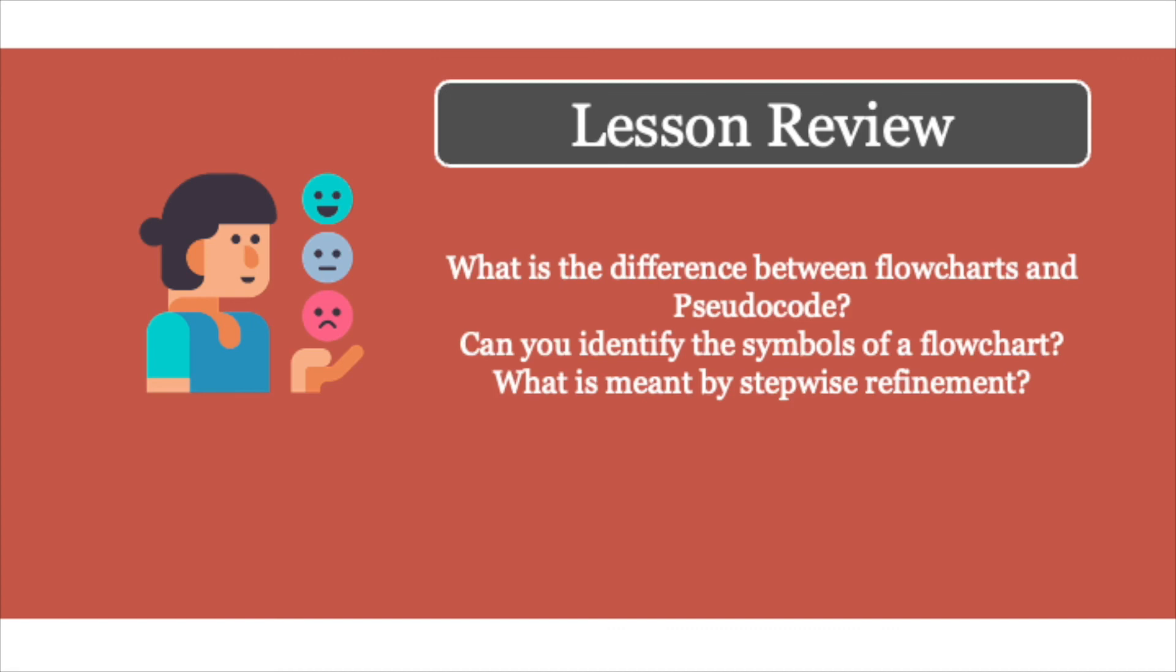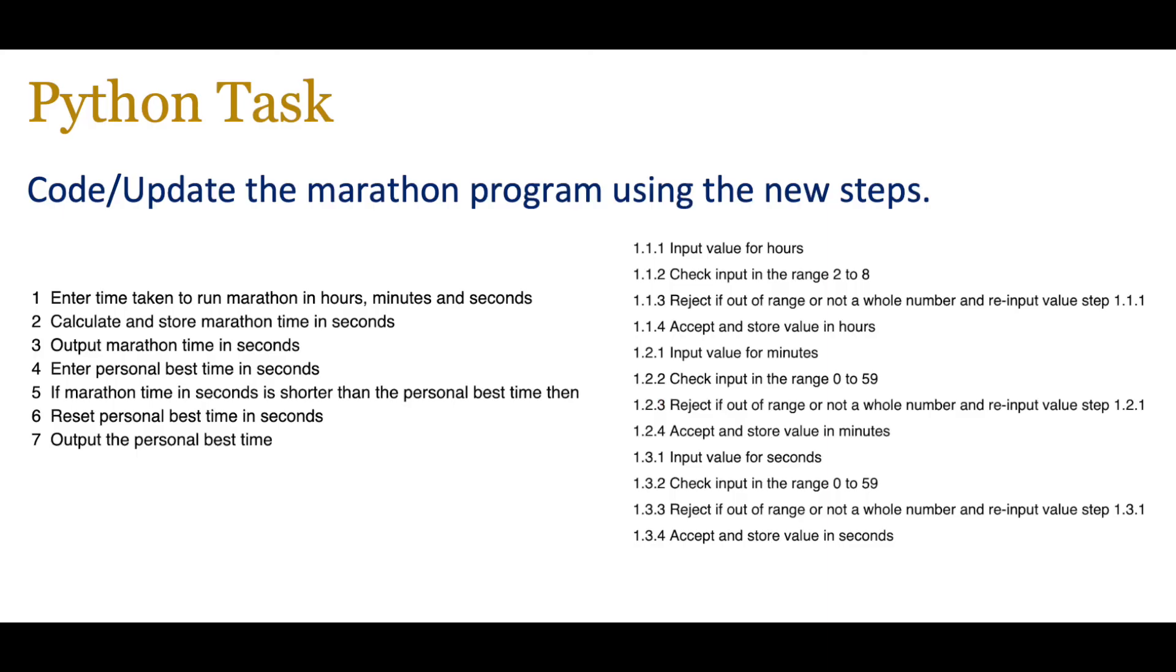So get into the nitty-gritty of pseudocode and coding. Now, I'm going to leave you with a Python task for the remainder of the lesson. Our marathon program, which is now quite heavily detailed, can you update, or can you code this marathon program using Python? Make sure that the relevant validations are in place as well, and just double-check that when you enter the personal best time, second validation also applies at that particular point as well. Have a go, and share the code with me. Bye for now.